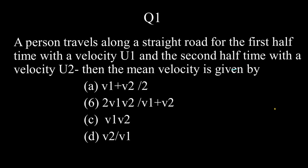Okay, so this is the first question in the next topic, that is average speed and average velocity. Let's start solving this. A person travels along a straight road for the first half time with velocity u1 and the second half time with velocity u2, and then the mean velocity, mean or otherwise average velocity, is...